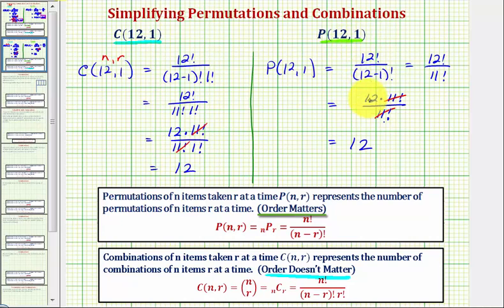So notice how in both cases, the number of permutations and combinations is the same. And this is only true because we're only taking one item at a time. If we were taking more than one item at a time, the number of combinations and permutations would be different. There'd be more permutations than the number of combinations.